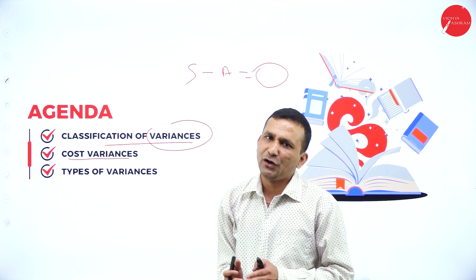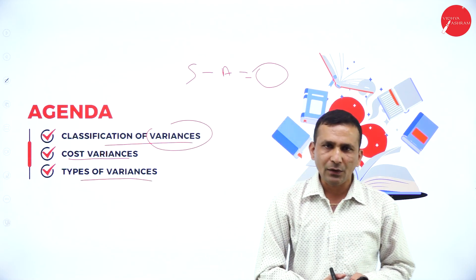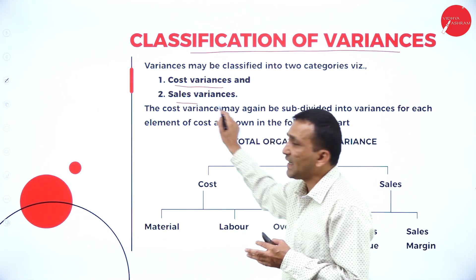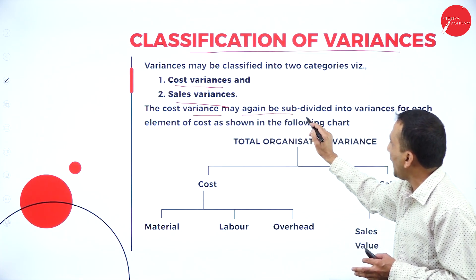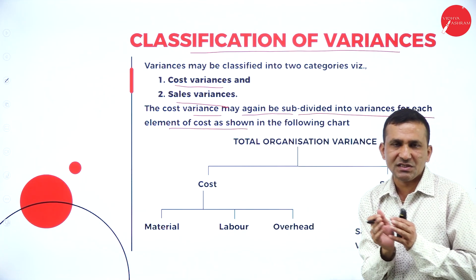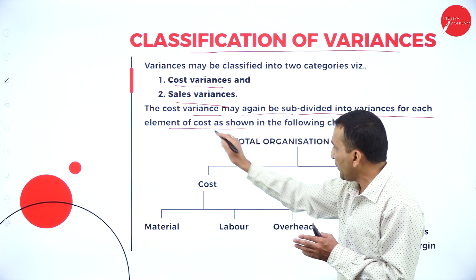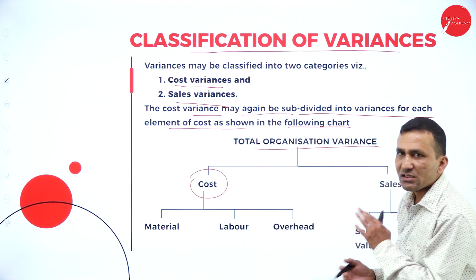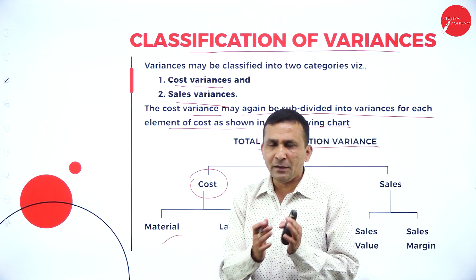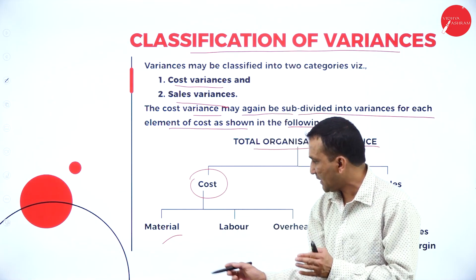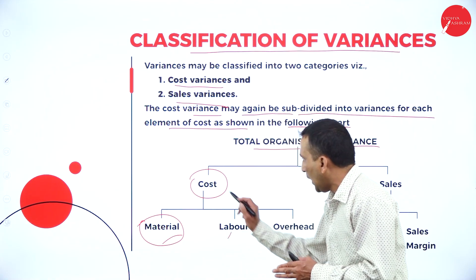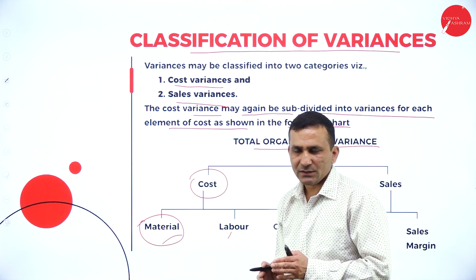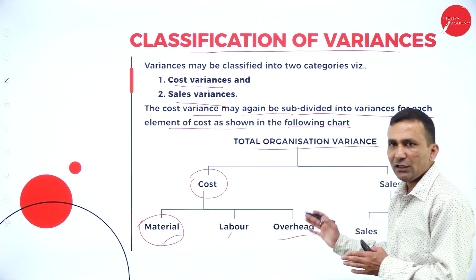The cost variance — we can find out the cost of variance and the types of variance. The classification of variance is majorly based on cost variance and sales variance. The cost variance may be subdivided for each element of cost connected to production: material, labor, and overheads. So the material cost variance, labor cost variance, and overheads cost variance.